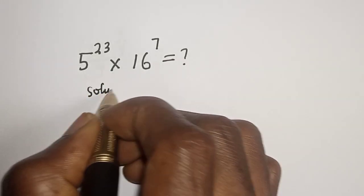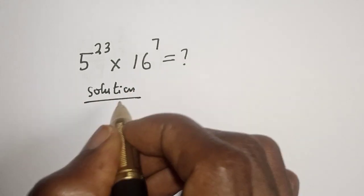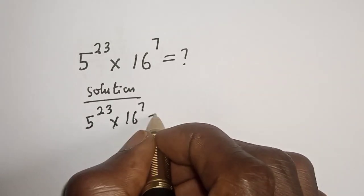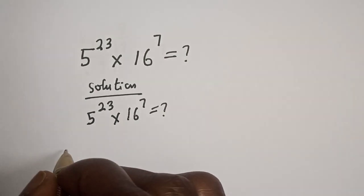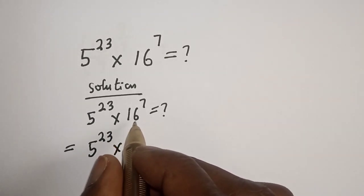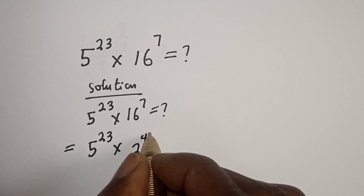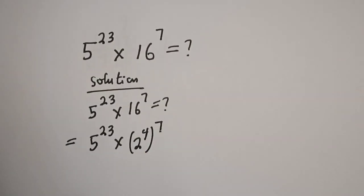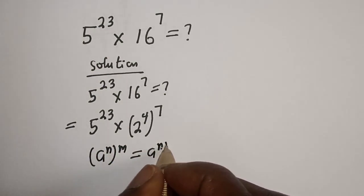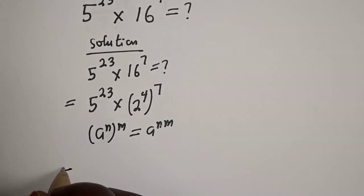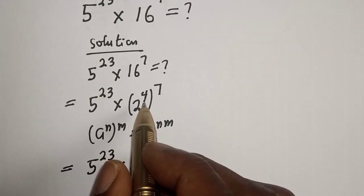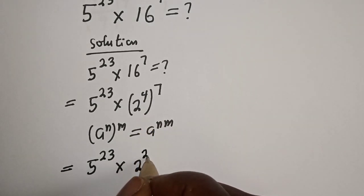Solution. 5 raised to power 23 multiplied by 16 raised to power 7 is unknown. So, 16 can be written as 2 raised to power 4, giving us 2 raised to power 4 to the power of 7. If you have a raised to power n to the power of m, this is equal to a raised to power n times m. So we get 5 raised to power 23 multiplied by 2 raised to power 4 times 7, that is 28.